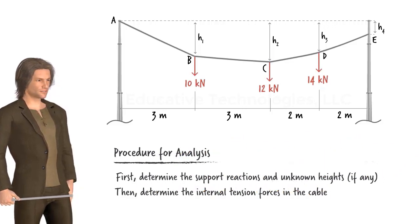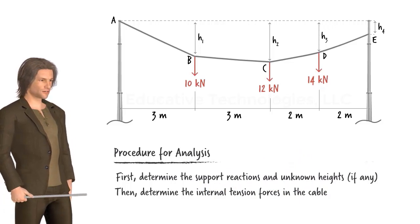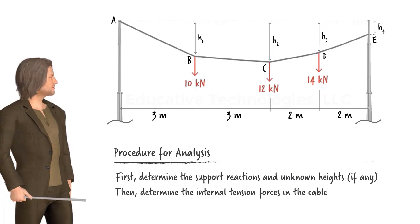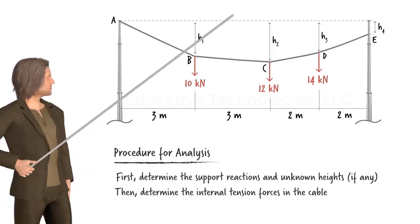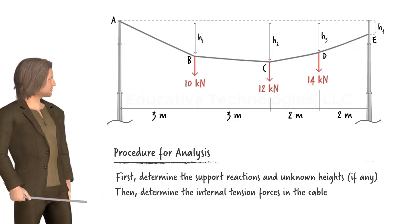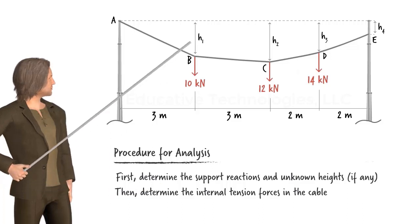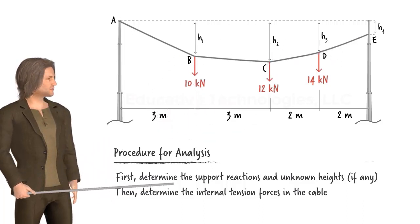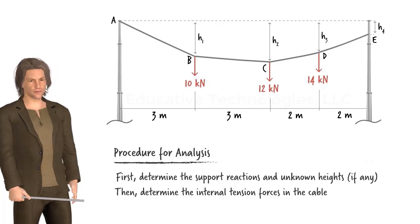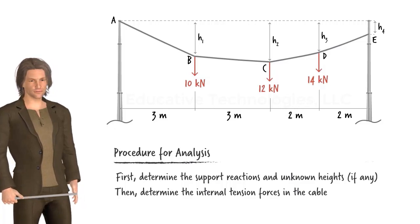Viewing the two ends of the cable as pin connections, four unknown support reactions are present — two unknown forces at each end of the cable. Additionally, there are up to four unknown heights. Therefore, in order to completely analyze this cable system, we must determine up to eight unknowns.